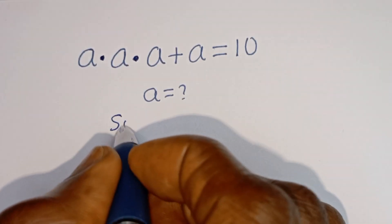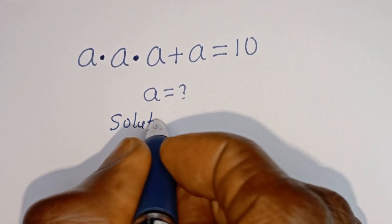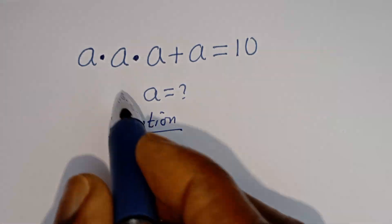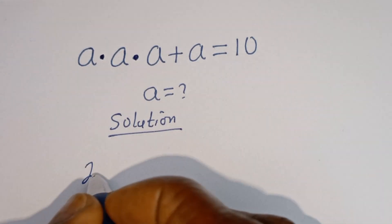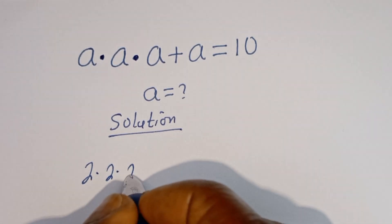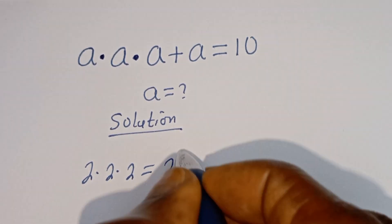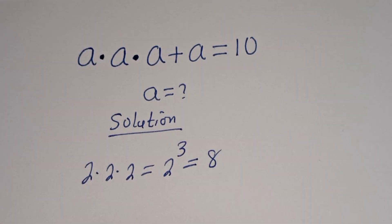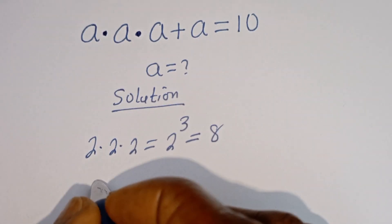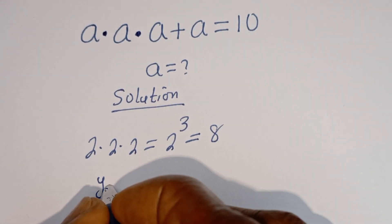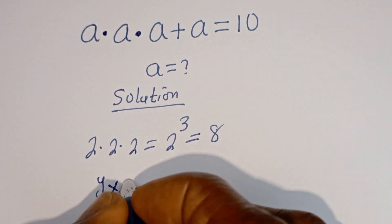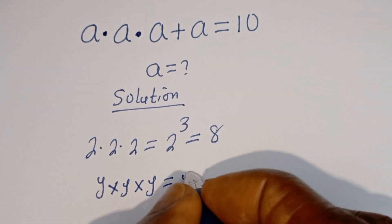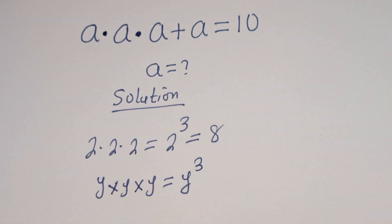Solution. Take note that if you have 2 multiplied by 2 multiplied by 2, this is equal to 2 to the power of 3, which equals 8. Then if you have Y multiplied by Y multiplied by Y, this is equal to Y to the power of 3.